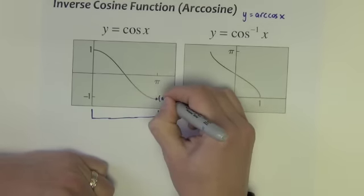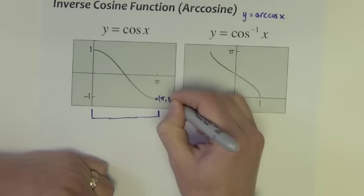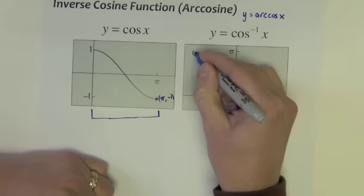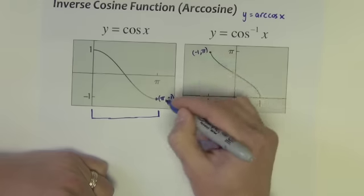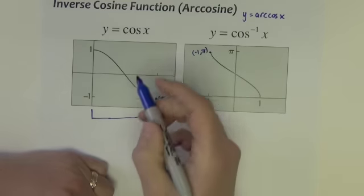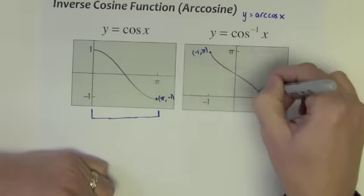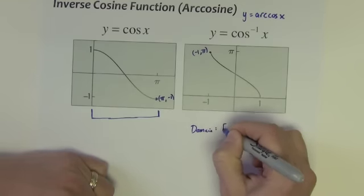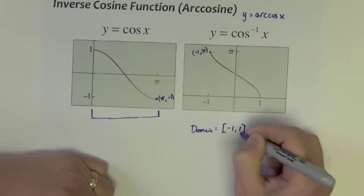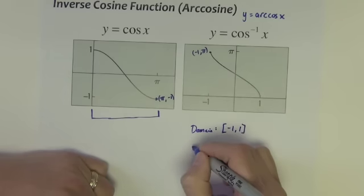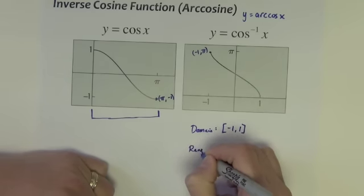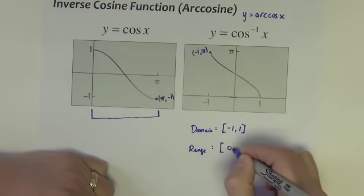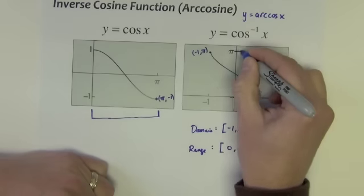And just like with the inverse sine, we take all these x, y points, for instance, pi, negative 1, and we invert it to negative 1 comma pi. And notice all we do is just interchange the x and y's. And if we do that at every point on this graph, we produce this graph over here. Now the domain for this graph is negative 1 to 1, same as inverse sine. The range for this graph is different, however. Its bottom value is right here at 0. Its top value is up here at pi.